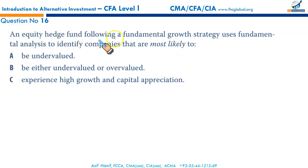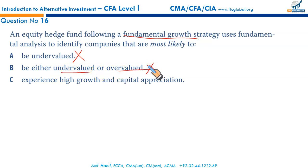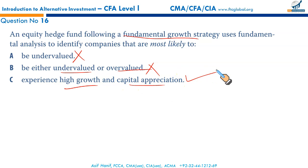An equity hedge fund following a fundamental growth strategy uses fundamental analysis to identify companies most likely to be undervalued — incorrect, because fundamental value strategies use fundamental analysis to identify undervalued companies, not the fundamental growth strategy. Likely to be either undervalued or overvalued — incorrect, as market neutral strategies use quantitative or fundamental analysis to identify under or overvalued companies. Fundamental growth strategies use fundamental analysis to identify companies most likely to experience high growth and capital appreciation. That makes C the correct option.